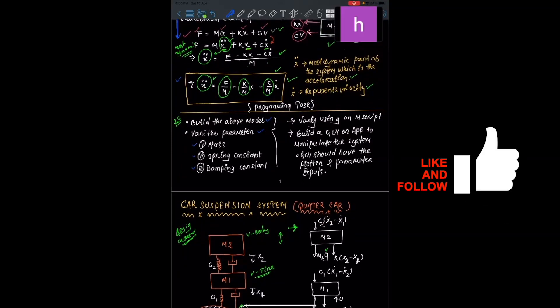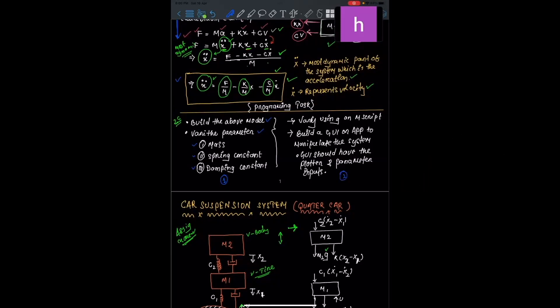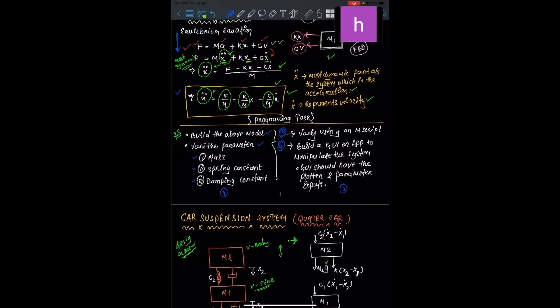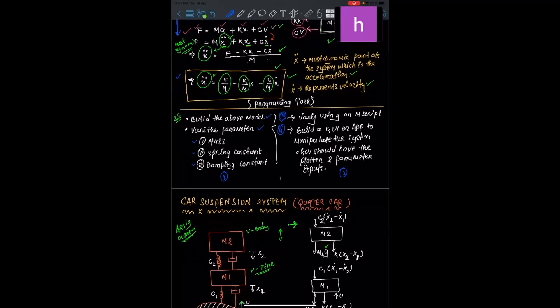This will be the first part. Then coming to the second part: we will use an M-script. The first part we will do manually, but the M-script will do the simulation for multiple parameters and we will plot the data. The third step is to create it through the GUI, which will cover the remaining plot part as well.